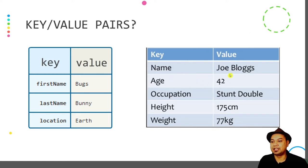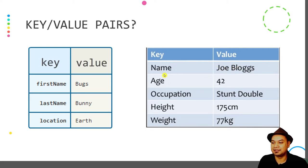To retrieve a value, you use its key. For example, if you want to get the name, you use the key 'name' to get the value 'Joe Blocks'. If you want to get the age, you request the key 'age' from storage and it will return the value 42.